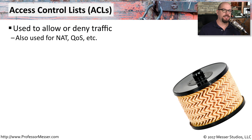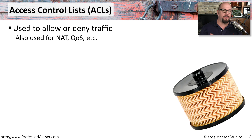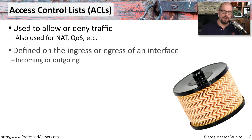Routers are not designed to be security devices, but there are some capabilities built into the router that do provide some security functions. One of these is an access control list, or ACL. This is used to allow or deny traffic, very similar to a packet filter in an operating system, and is also used when the router is configured for network address translation or quality of service. You commonly configure an access control list on the ingress or egress of an interface — filtering all traffic coming in or all traffic going out.